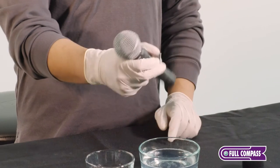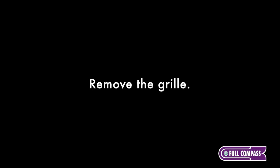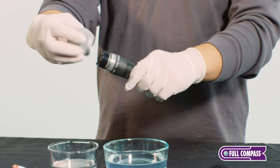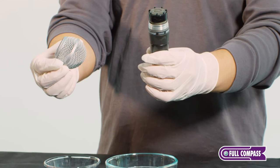Make sure your mic is unplugged before cleaning it. Most handheld microphones allow the outer metal mesh grille to be removed. Carefully unscrew the grille from the microphone body.